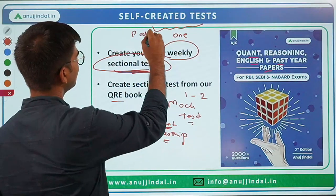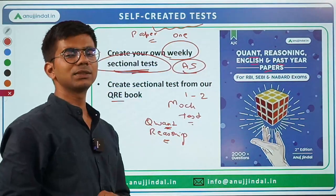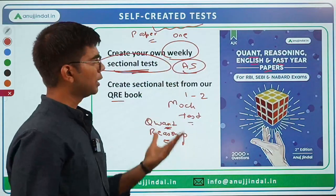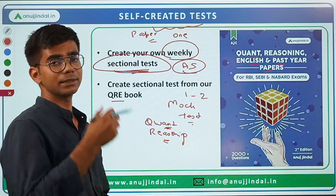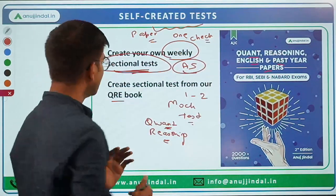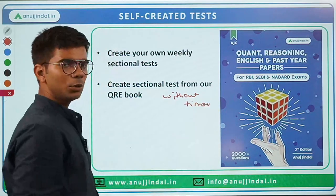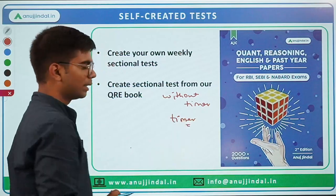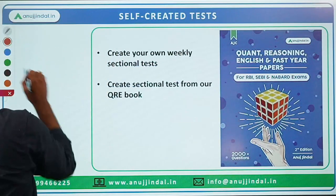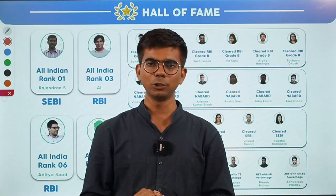Similarly for Paper 2, if you covered a topic like Indian Accounting Standards, you can create a small sectional test from that. Initially you can create tests without a timer, but gradually add a timer to check your speed and efficiency. This acts as a check on whether you are able to answer the questions and how much you are understanding from what you are studying.